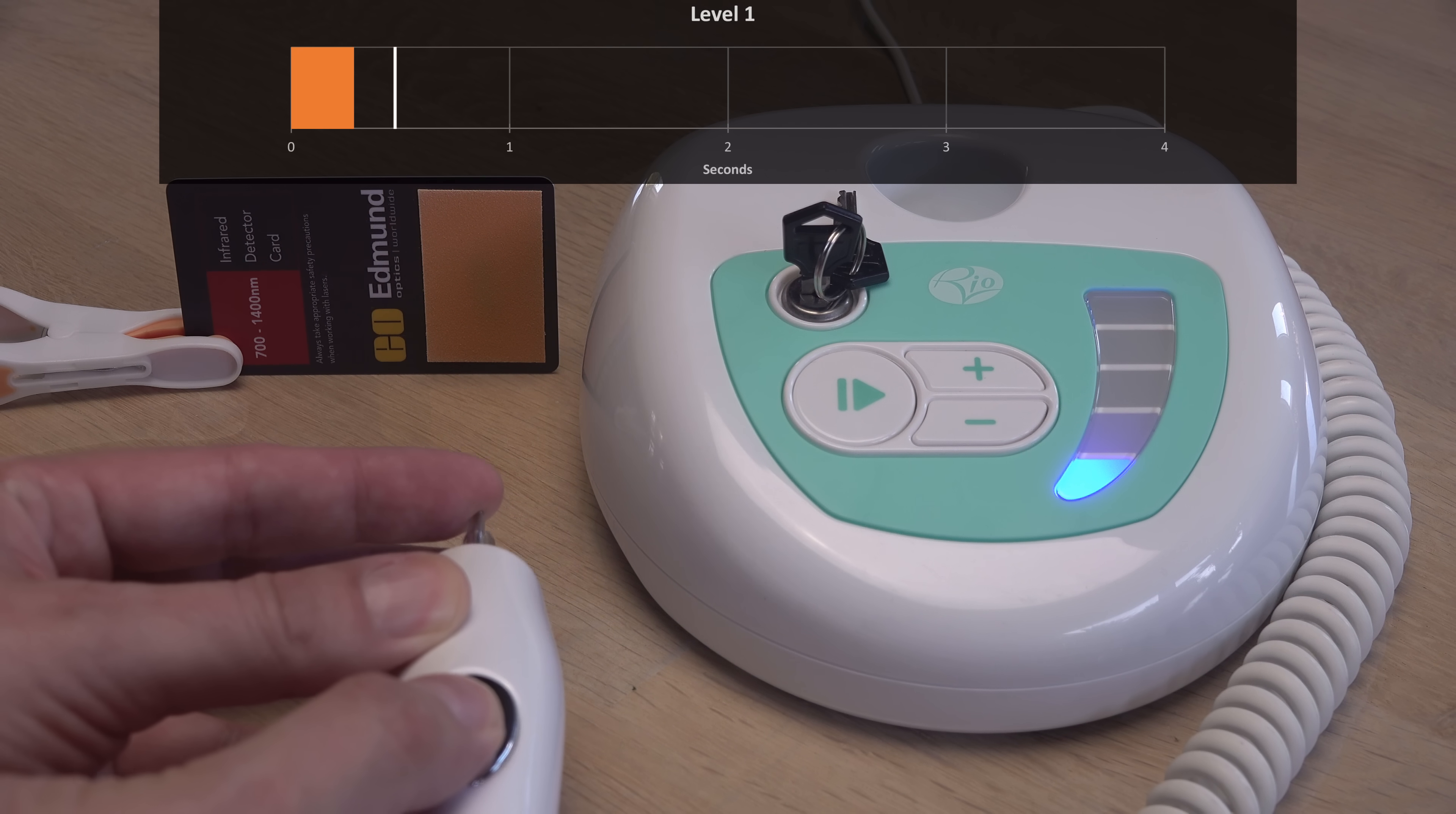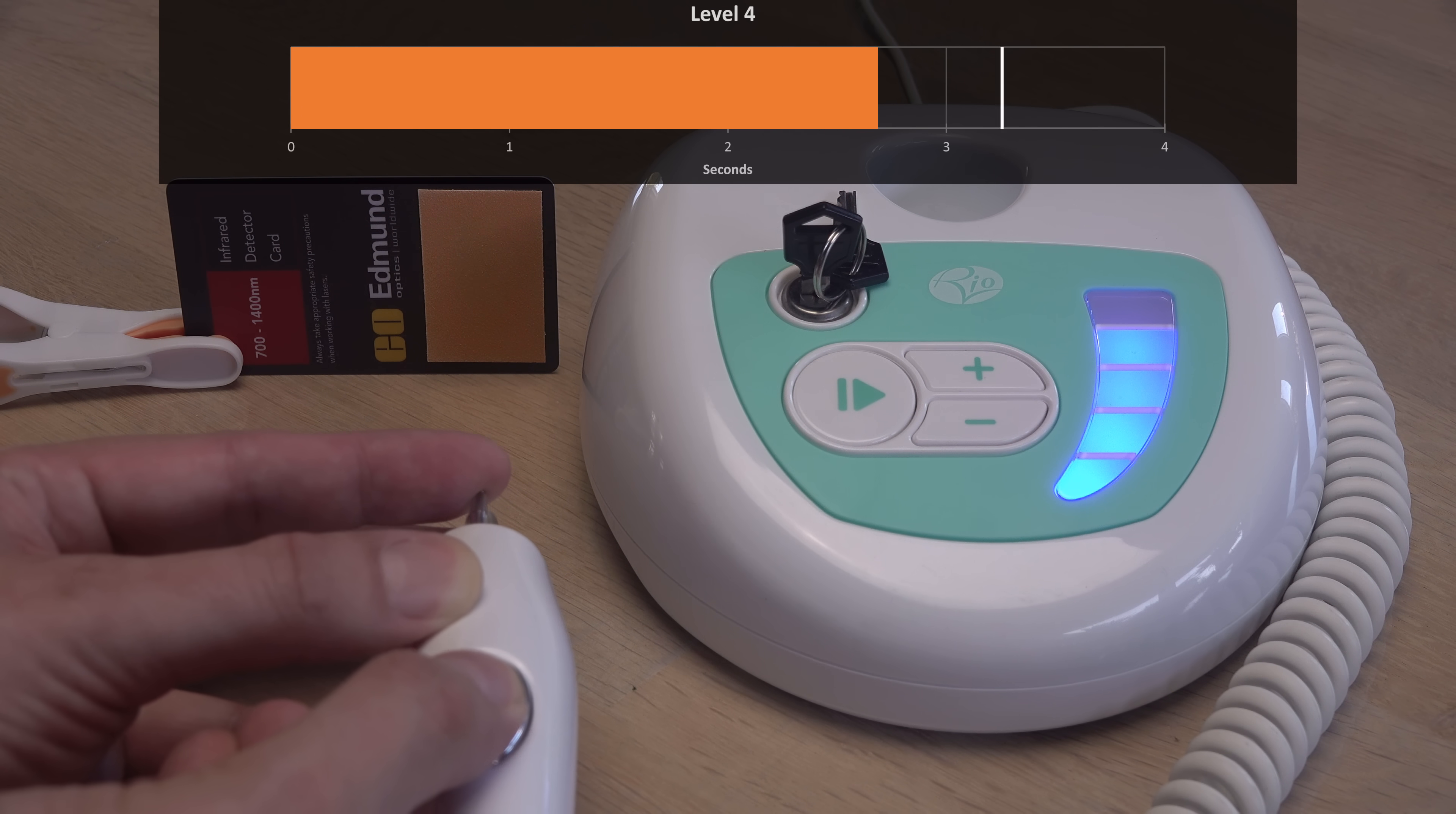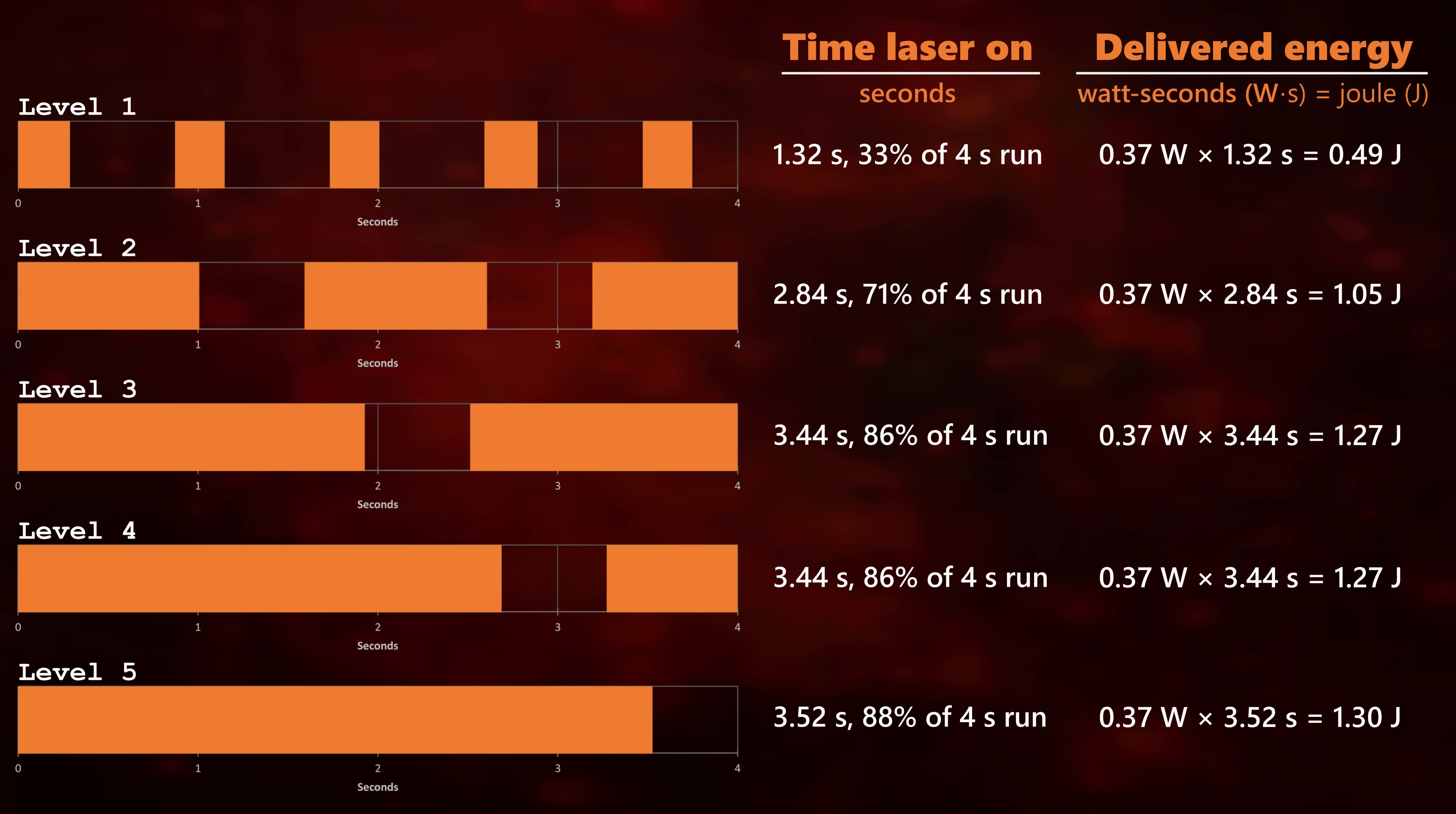I have mapped the different energy settings using an infrared detector card. Notice how similar the total energies are between the stronger settings but the heating effect is not because the lower settings have a shorter main pulse giving a lower peak temperature.